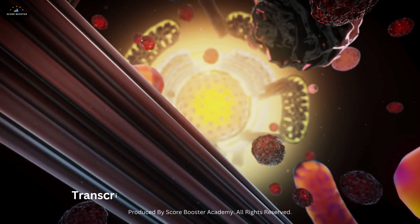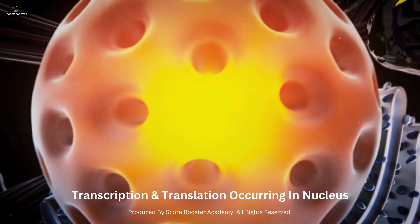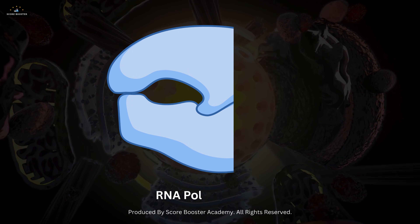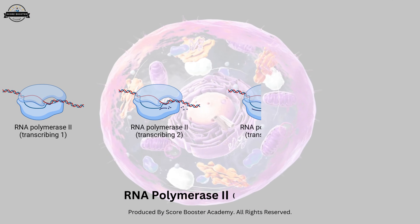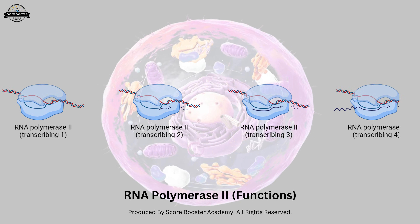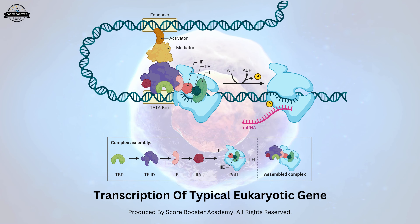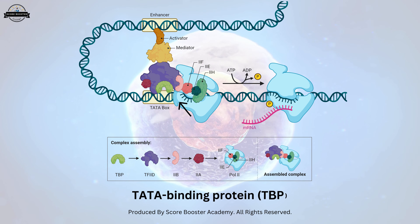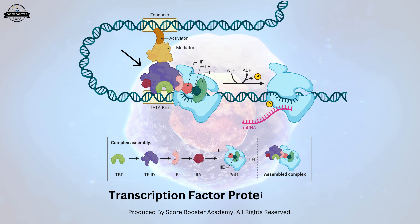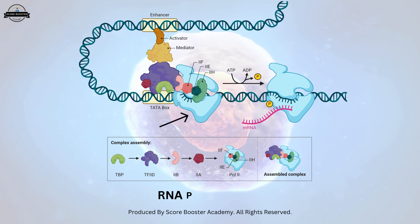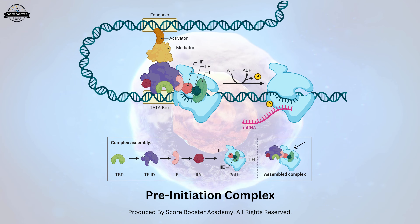Eukaryotic transcription, on the other hand, is more complex and occurs within the nucleus. Eukaryotic cells have three main types of RNA polymerases: RNA polymerase 1, 2, and 3, each responsible for transcribing different classes of genes. RNA polymerase 2 transcribes protein-coding genes and requires a set of general transcription factors to initiate transcription. In the transcription of a typical eukaryotic gene, the TATA-binding protein binds to the TATA box in the promoter region. TATA-binding protein is a component of the transcription factor TF2D, which recruits other transcription factors and RNA polymerase 2 to form a pre-initiation complex, which then begins the transcription process.